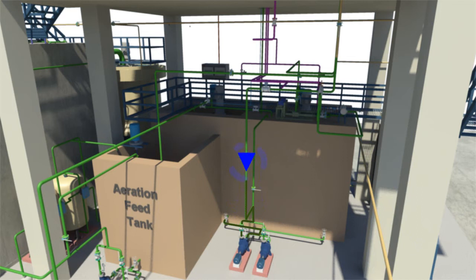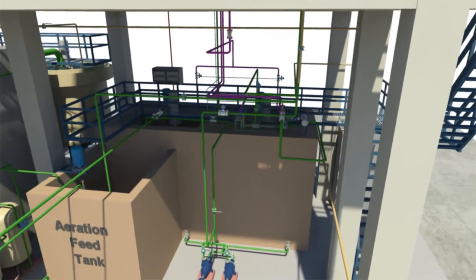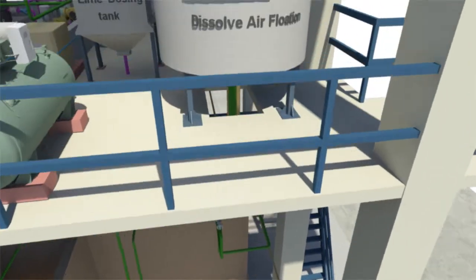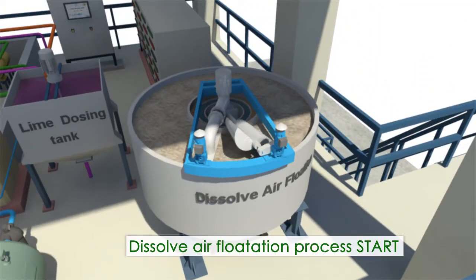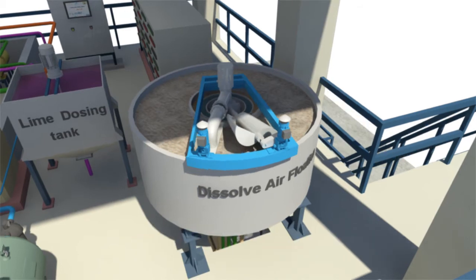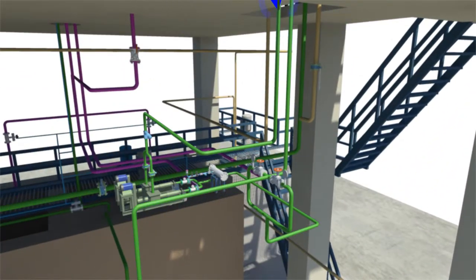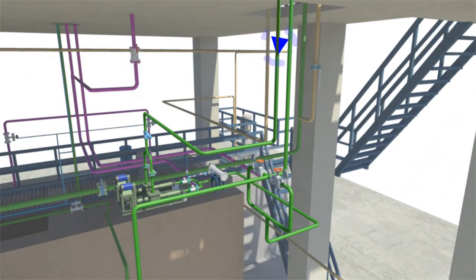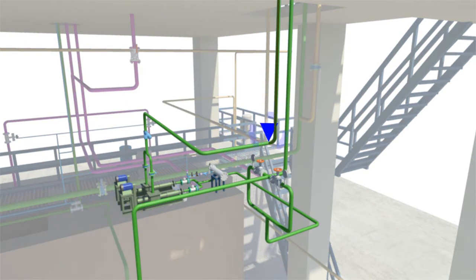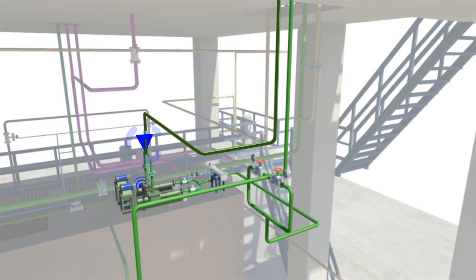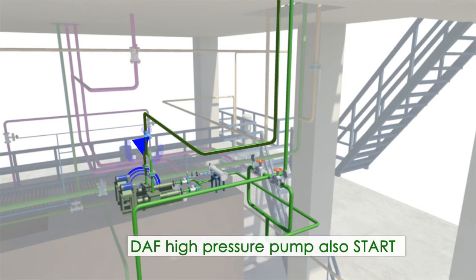After the DAF pump begins, the DAF high-pressure pump and alum and polymer dosing system also start. This brings all effluent into circulation in the DAF system. The output of the DAF high-pressure pump continues into the next stage of treatment.